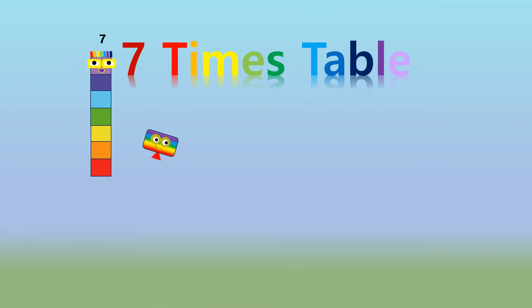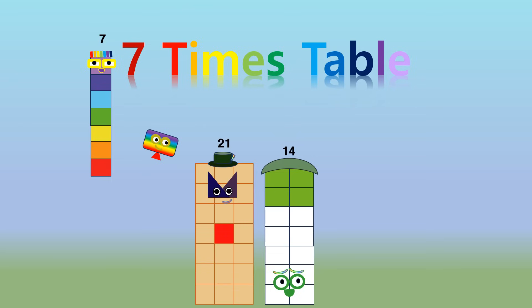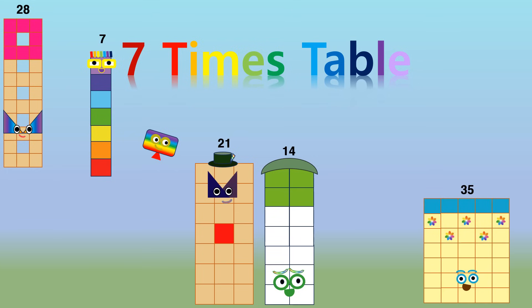1 7 is 7. 2 7s are 14. 3 7s are 21. 4 7s are 28. 5 7s are 35.